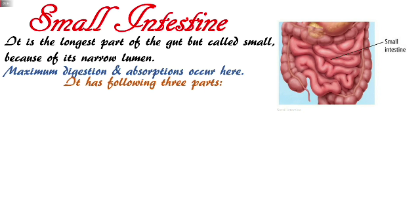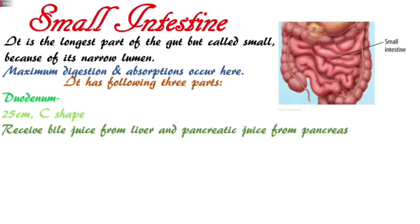The small intestine has three parts: duodenum, jejunum, and ileum. The duodenum is 25 cm in length. Imagine a big pipe divided into 3 parts — the duodenum is the first part. It is joined by the pyloric region, and in this region there is also a pyloric sphincter, which I have discussed in the previous video.